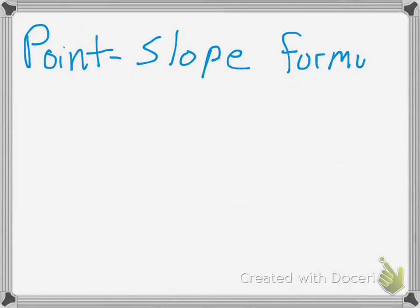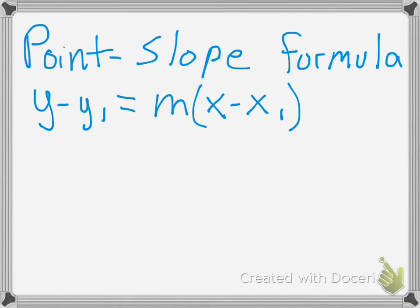It's called point slope formula. This is what I want you to use to find your new line. Find your parallel line. So, x minus x1 here. And, pause the video. Make sure you jot that down.